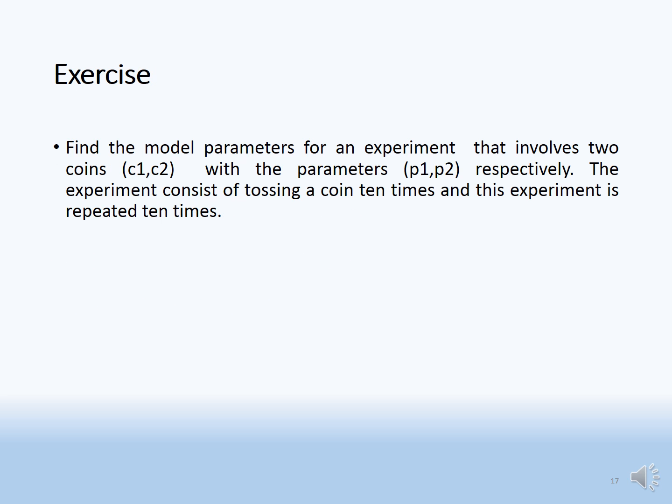Exercise: find the model parameters for an experiment involving two coins C1 and C2 with model parameters p1 and p2 respectively. The experiment consists of tossing a coin 10 times, repeated 10 times. This exercise is the same as the example in the last slide.